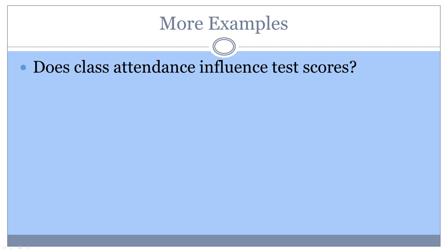For each of these questions, try to identify the variables. In the first question, does class attendance influence test scores? The study would be a descriptive non-experimental correlational study and the variables would be class attendance and test scores. Which variable is independent and which one is dependent? From the way it is worded, you can tell that the researchers think that test scores may be influenced by attendance. So that means that the test scores would be the dependent variable. Therefore, class attendance is the independent variable.